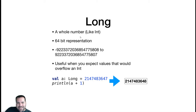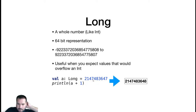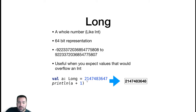A Long is just like an Int except it's a 64-bit representation. We can represent much larger numbers. If you expect your values to overflow an Int — to go over about 2.1 billion — swap it out with a Long. Everything that an Int does, the Long does, just with 64 bits instead of 32. So if we're at the max value for an Int and add one, we're fine with a Long. But if we were at the max value for a Long and added one, we would still wrap around and overflow.